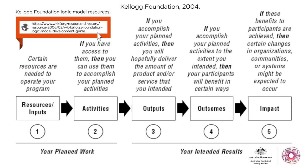There are hundreds of different ways to do a program logic but at its most basic it consists of inputs, outputs and outcomes. When these three elements come together we can really see how a project or program is supposed to work. A helpful way to think about program logic is the 'if this then that' concept. Looking at the Kellogg Foundation diagram: if you put resources into a program then you can deliver your planned activities, and if you deliver your planned activities then your participants will benefit in certain ways.